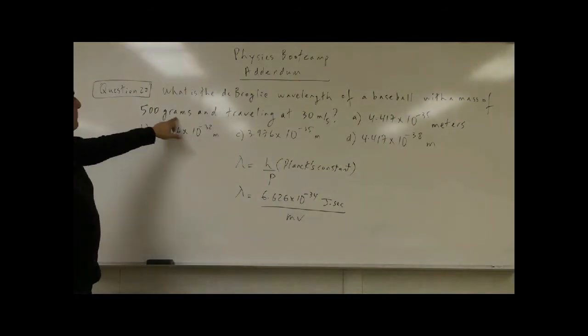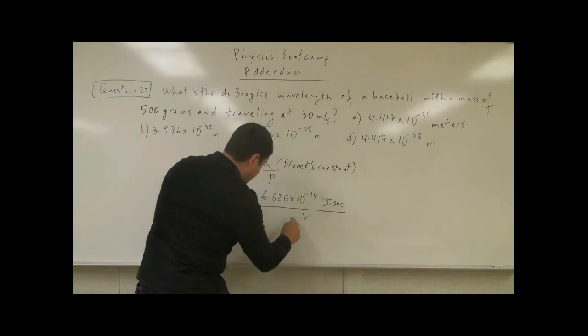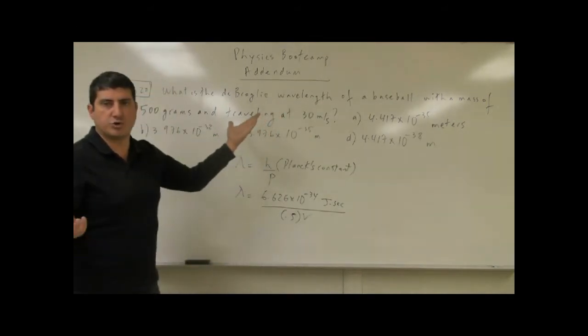Well, the mass of the baseball is 500 grams. Convert that to kilograms: 0.5 kilograms. So for the mass m we put 0.5 kilograms, and the velocity is 30 meters per second. This one we don't have to do any conversion, so for the velocity we put 30.